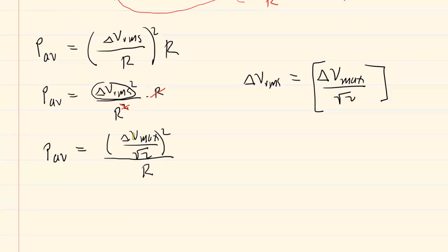Continuing the journey here, we're going to square both the numerator and the denominator. So now we have average power equals delta V_max squared over two. Remember, the square root of two squared would just be two. And this is all over the resistance.